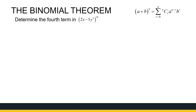For example, determine the fourth term in the expansion of this binomial. We're referring to the binomial theorem as it is written here. Please note, if your binomial theorem looks a little bit different, or you use some app to expand it, the fourth term will not necessarily be the same fourth term. So this is a subjective question, but we are referring to the theorem as it stands over there.